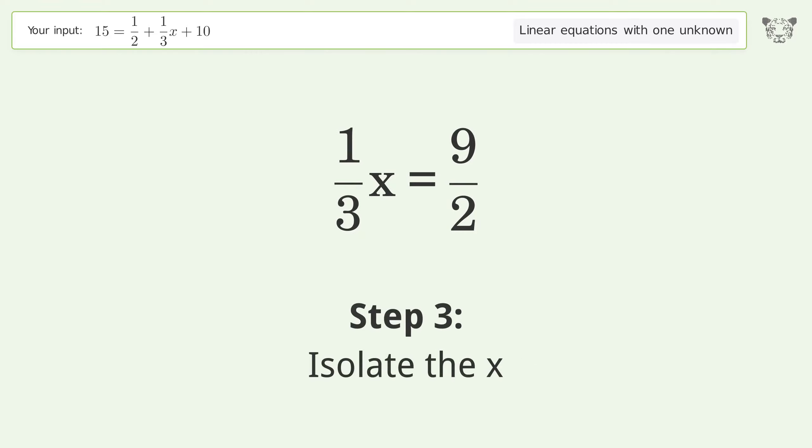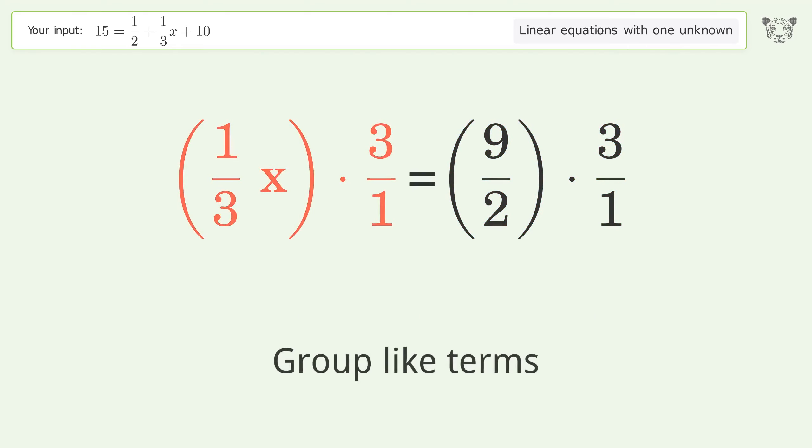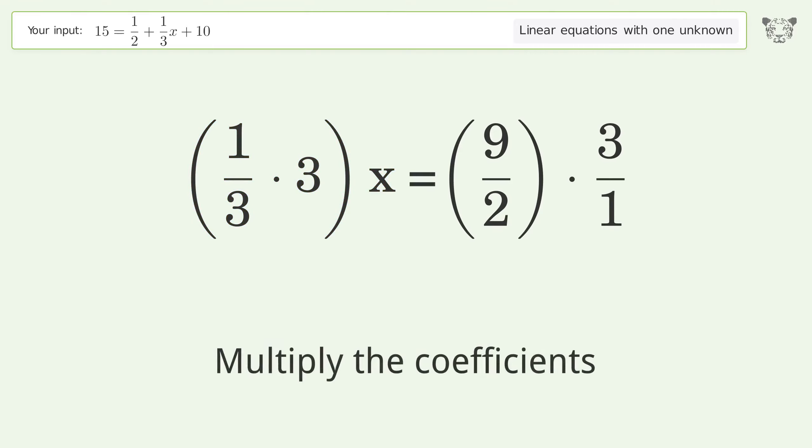Isolate the x. Multiply both sides by the inverse fraction 3 over 1. Group like terms. Multiply the coefficients.